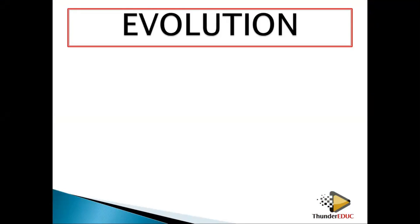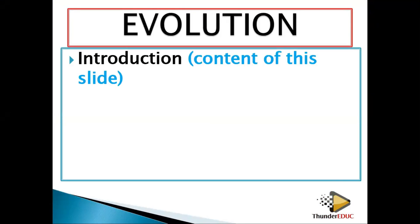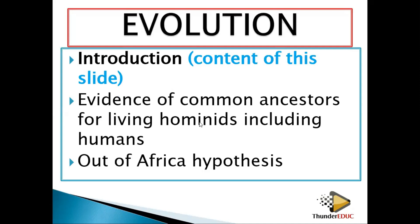In human evolution, the things we need to cover are: number one, evidences of common ancestors — we are going to look at them and see how we can answer questions about that. Then the out-of-Africa hypothesis, which states that modern humans originated from Africa and migrated to the rest of the world.